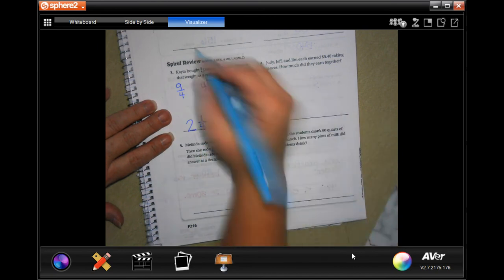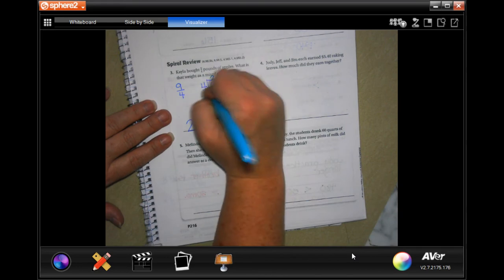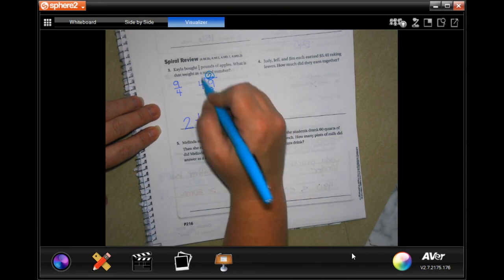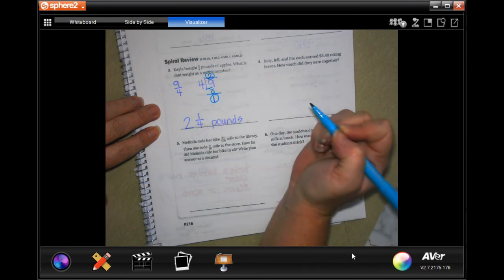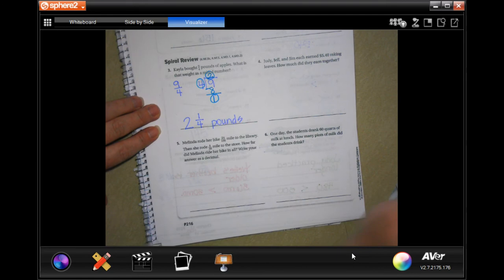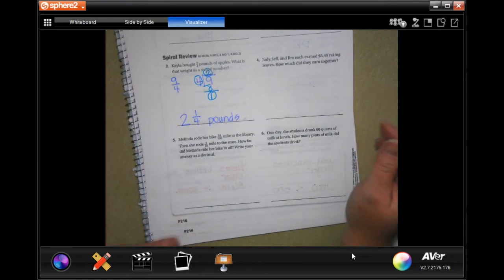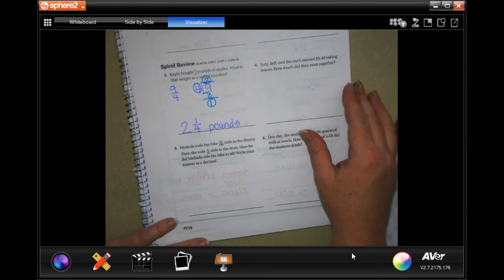That winds up being the same if you do it this way. The two is your big number, the one is your new numerator, and you keep your denominator.